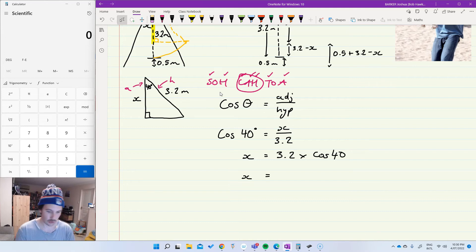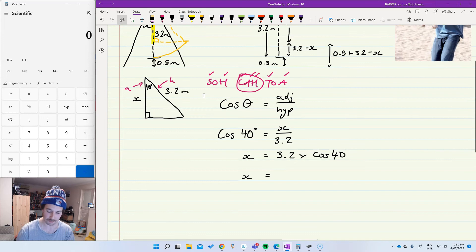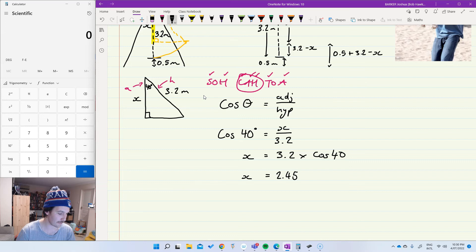So I'm going to do 3.2 multiplied by cos 40 gives me 2.45. Now I'm just going to check what I'm rounding this to. So I'm going to the nearest centimeter, which means I need to go to the nearest hundredth of a meter for this one. So X is going to be 2.45 meters to two decimal places.